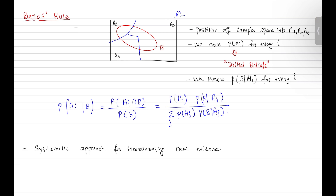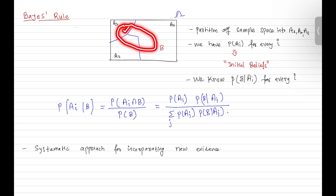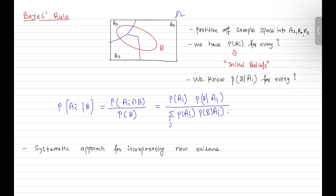We have another event B, and this event B belongs to each scenario: event B belongs to scenario A1, to scenario A2, and to scenario A3. We also have the information about the likelihood of B under each scenario — that is, the probability of event B given scenario A1, given A2, and given A3. We know all these probabilities.